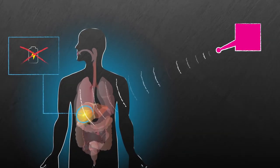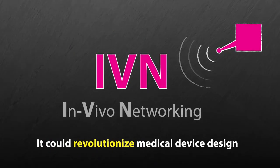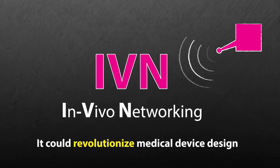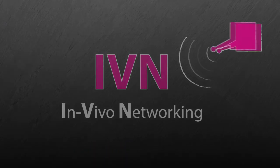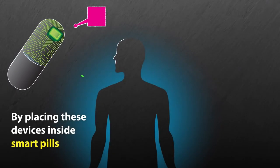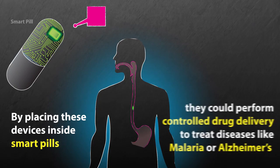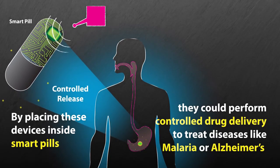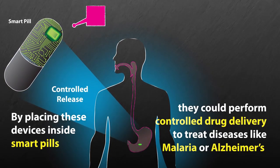The researchers envision that the technology, called IVN, could revolutionize medical device design. For example, by placing these devices inside smart pills, they could perform controlled drug delivery inside the stomach to treat diseases like malaria or Alzheimer's.